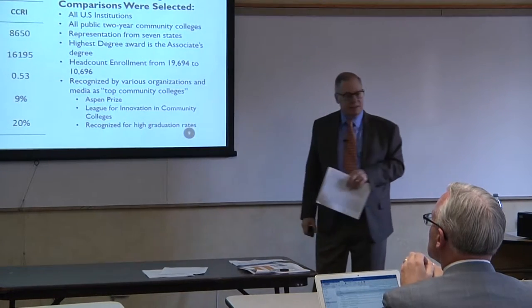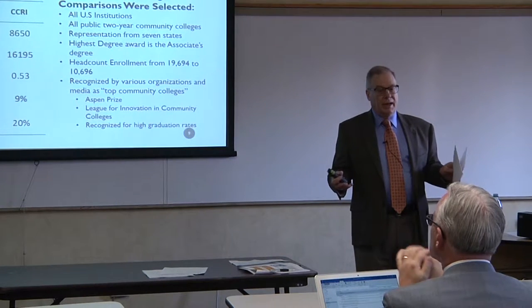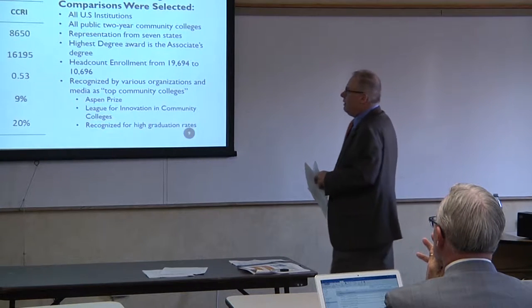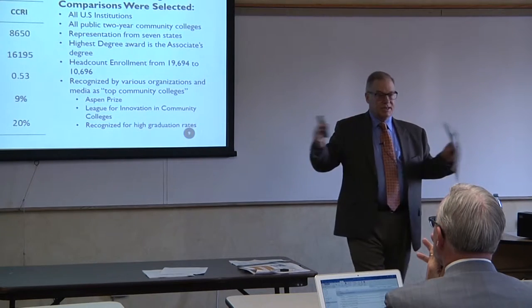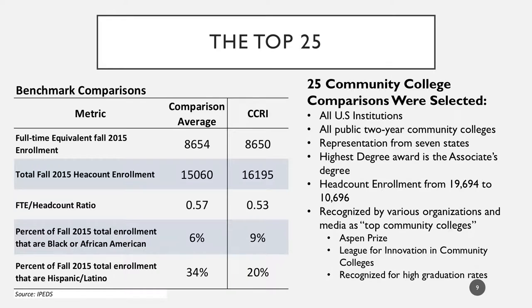We had a couple of different comparison groups: a group of New England institutions very similar to your area, a broad group containing hundreds of institutions, and a group we call the top 25. These are all US public community colleges from various regions of the country where the highest degree is the associate's. Enrollment goes from roughly just over 10,000 to almost 20,000. These top 25 institutions were recognized over the years by various organizations as top community colleges.